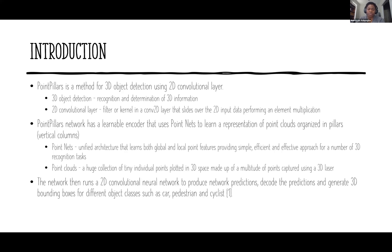PointPillars is a method for 3D object detection using 2D convolution layers. 3D object detection is the recognition and determination of 3D information by volume and point, usually using a 3D scanner or LiDAR. A 2D convolution layer is a filter that slides over 2D input data performing element-wise multiplication. The PointPillar network has a learnable encoder that uses PointNets, and it is used to learn a representation of point clouds organized into pillars — vertical columns.